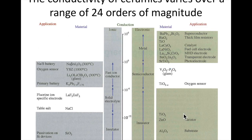Now that we've reviewed some electronic equations that we'll need to know, let's take a look at electrical conductivity and ionic conductivity as well. Traditionally, ceramics are thought of as electronically insulating and also thermally insulating, and they're often used for applications that call for that insulation — ceramic mugs, insulation material — things like that. That's kind of the traditional application of ceramics.